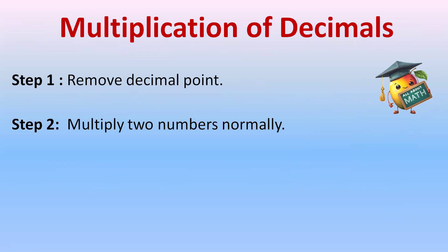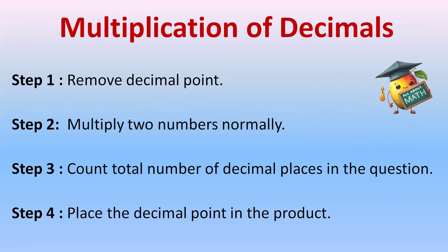Step 2: Multiply two numbers normally without decimal. Step 3: Count total number of decimal places in the question. Step 4: Place the decimal point in the product or in the answer at the end.